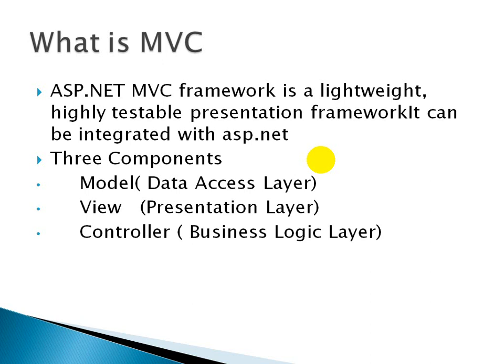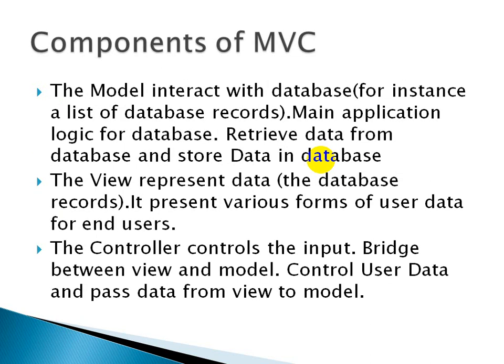So the end user interacts with the View. The Model interacts with the database — for instance, a list of database records — and handles main application logic: retrieving data from the database and storing data. The View represents data and presents various forms of user data for the end user, showing formatted output. The Controller is the bridge between View and Model — it controls user input and passes data from View to Model.